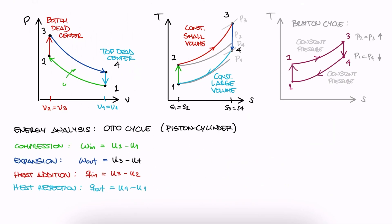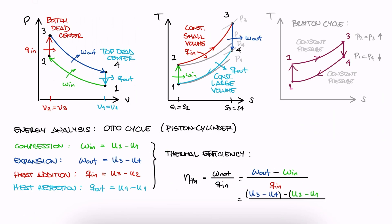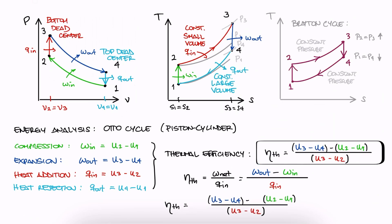With these, we can write the thermal efficiency of the Otto cycle. The net specific work is work out minus work in, and the specific heat in is the specific heat between 2 and 3. This would result in U3 minus U4 minus U2 minus U1 over U3 minus U2, or alternatively, all of these in terms of CV.